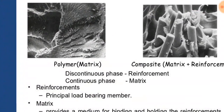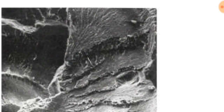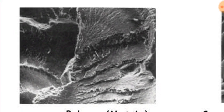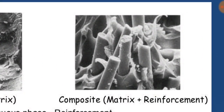This is the polymer matrix composite. The composite consists of a matrix and reinforcement — it is a microscopic structure. The polymer matrix is a component used as a binding agent for the reinforcement to form a composite. The composite consists of a matrix, which is the binding material, plus the reinforcement, which is the load-bearing material.